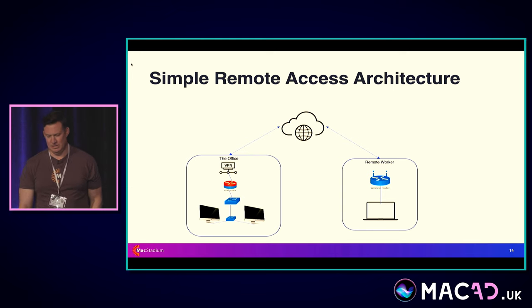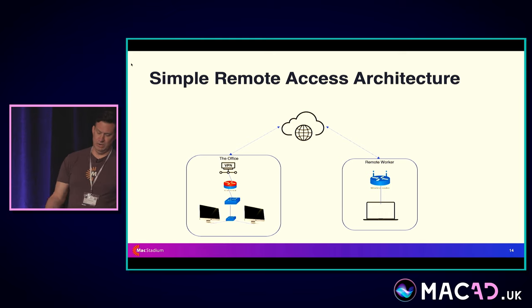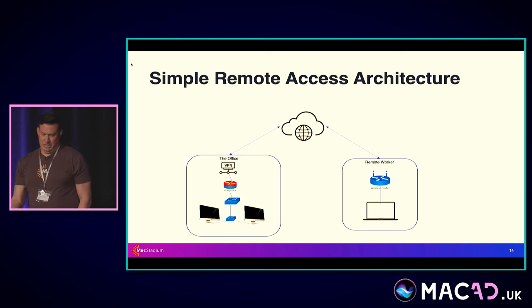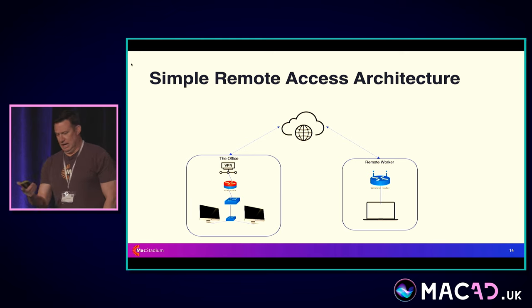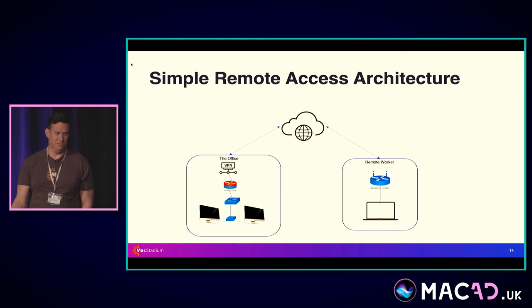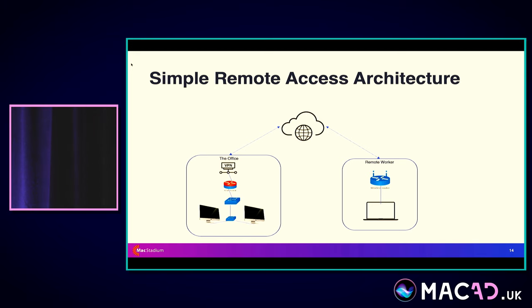If you look at a simple remote access architecture: you're going to have an office with a desktop, probably a hub or router, going up to a switch, and then some switch or firewall. Hopefully you're bolting on a VPN — a blessing and a curse, because VPN is secure but really doesn't like streaming protocols and remote access protocols. It packet-inspects everything. You're going to go through a public internet at some point, and then the remote worker is anybody's guess on their Wi-Fi capability.